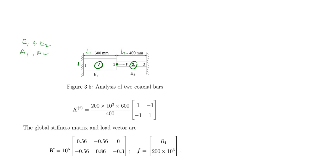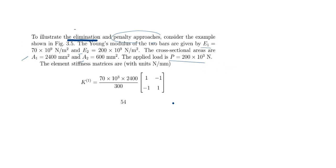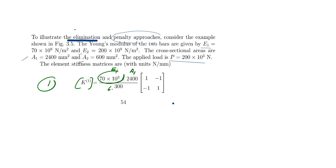For a bar element, the stiffness matrix equation is K = (E·A / L) × [1, −1; −1, 1]. Now substituting values for element 1, K1: the Young's modulus value is 70, A1 is the cross-sectional area, and L1 is the length. E1 is taken as 70 × 10³ even though it is given as 70 × 10⁹ N/m².